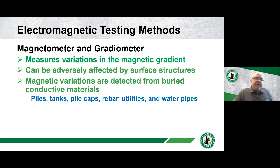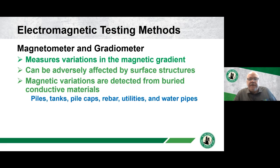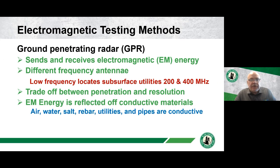Electromagnetic methods include magnetometers and gradiometers, which measure variations in the magnetic gradient. Different subsurface structures like tanks, piles, and utilities can all have variations from buried material — understanding how those changes show up, what they look like, where they are, and how deep they are is important for locating tanks, pipes, and structures.